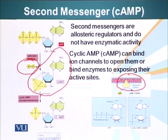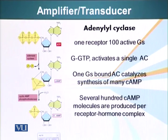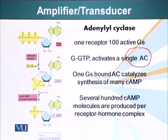This cyclic AMP is produced and will go on to cause further effects. Importantly, there is another molecule called cyclic AMP phosphodiesterase - similar to cyclic GMP phosphodiesterase mentioned earlier - which breaks cyclic AMP back into a normal AMP molecule, terminating its effects. One receptor can activate 100 G proteins, and a single G protein generally activates a single adenyl cyclase, which can then synthesize many cyclic AMP molecules - several hundred per receptor-hormone complex. This is the signal amplification step, which is very important in the signaling cascade.